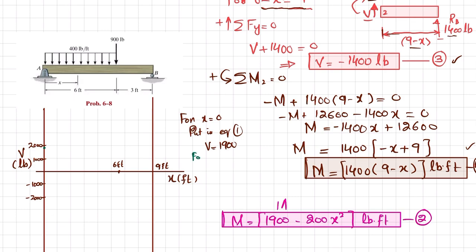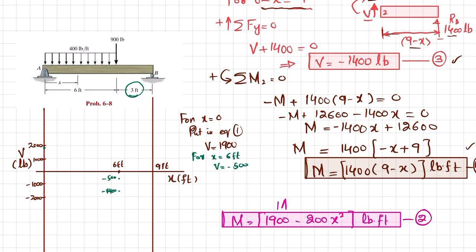At x = 6, V = −500 from equation 1. Then the 900-pound point load drops the shear further: −500 − 900 = −1400 pounds. So shear jumps to −1400 at x = 6. For x from 6 to 9 feet, the shear force is constant at −1400 (equation 3), so it remains horizontal. The UDL region is a sloped line from 1900 to −500.